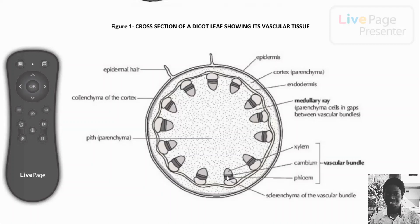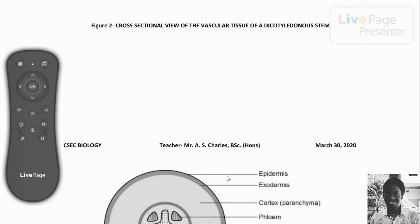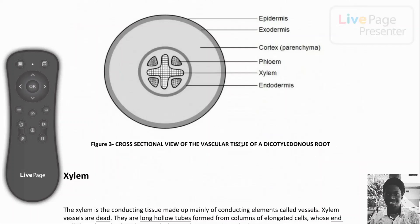The next figure depicts the cross-sectional view of the vascular tissue in a dicotyledonous root. Although it is not as developed as those in stems and leaves, the xylem can still be seen on the inside and the phloem on the outside, both surrounded by the endodermis. In this area we have the cortex containing parenchyma cells, and on the outside we have the epidermis.